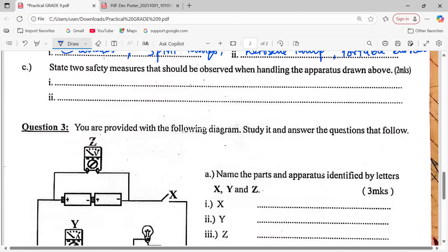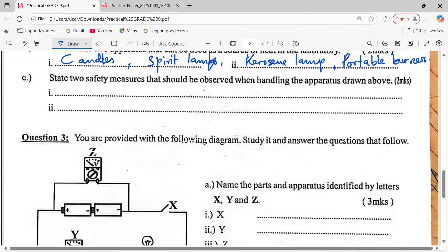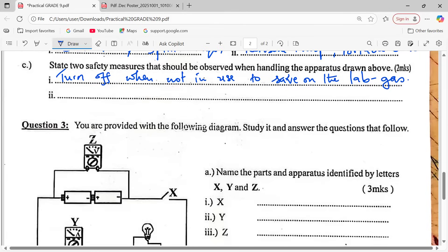State two safety measures that should be used when handling the apparatus above, that is the Bunsen burner. One, you should ensure that you turn off when not in use. This is to save on the lab gas. We have laboratory gas which is being used, so to save on it you turn off when not in use. You can also ensure that for your own safety - you know in the lab we talk about safety economically when handling the apparatus and also safety as you look at your own self - so do not lean your body towards the flame. This is to ensure that you don't burn yourself.